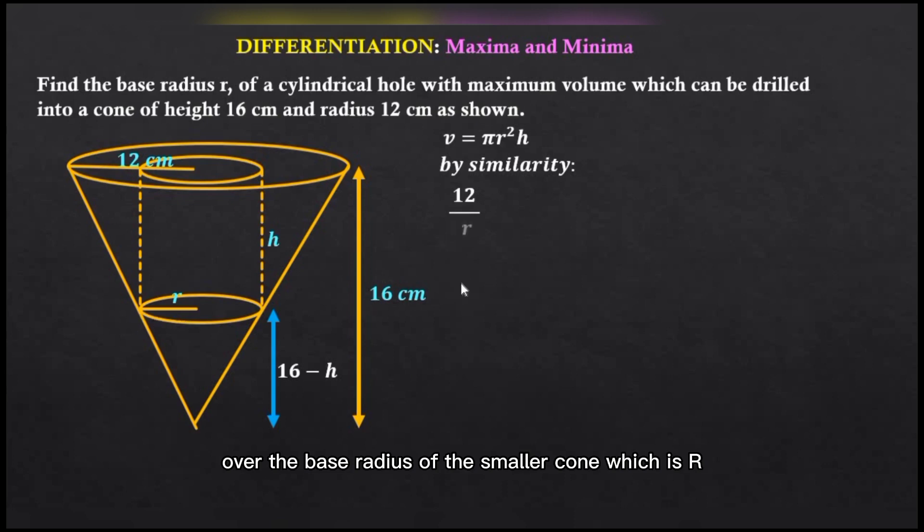We'll have the base radius of the bigger cone which is 12 centimeters over the base radius of the smaller cone which is r. That should be equal to the height of the bigger cone, that is 16 over the height of the smaller cone which is 16 - h.